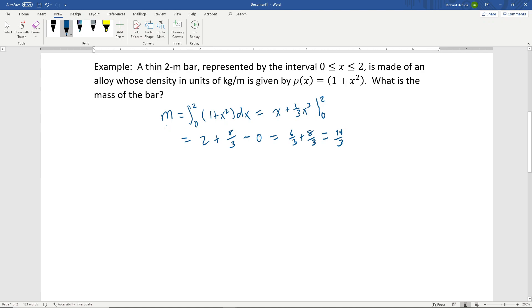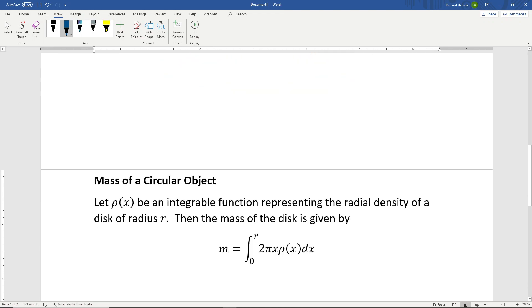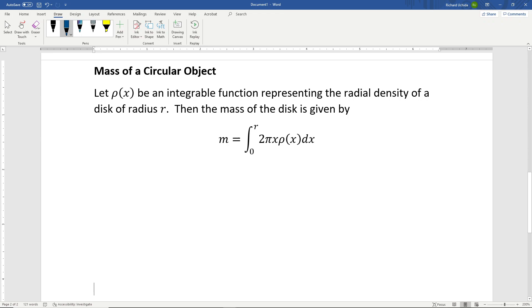That's how you calculate it for a one-dimensional object like a wire or string where we consider the thickness as negligible. Now let's talk about the mass of a circular object.